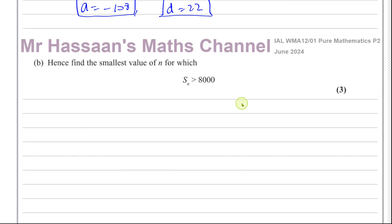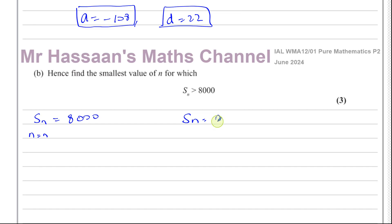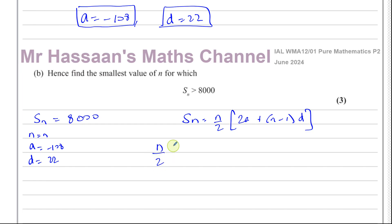For part B, it says: hence find the smallest value of N for which the sum of the first N terms is greater than 8,000. I like to first find when the sum equals 8,000. So N over 2 times (2 times negative 108 plus (N minus 1) times 22) equals 8,000.